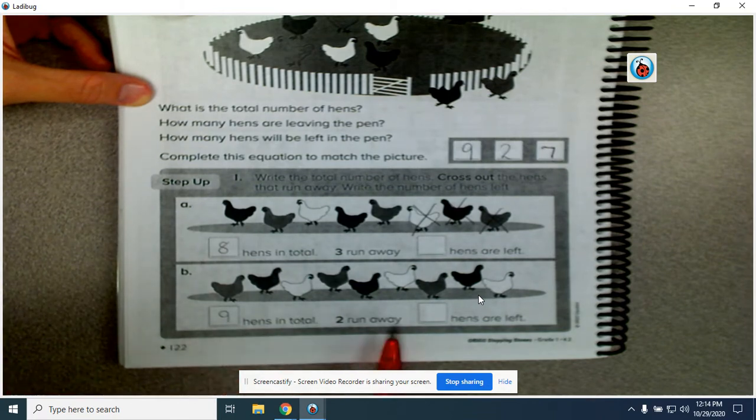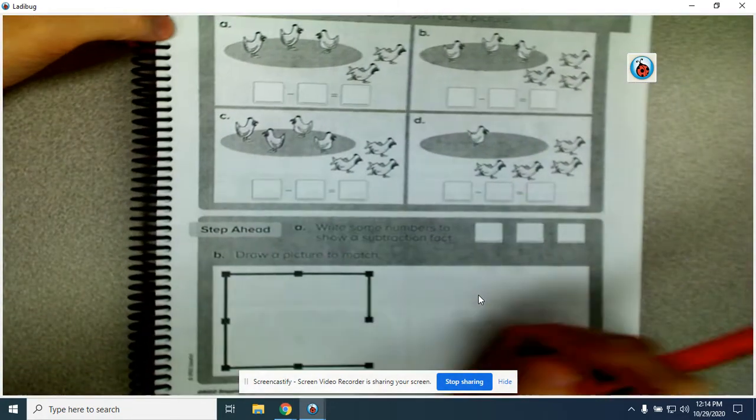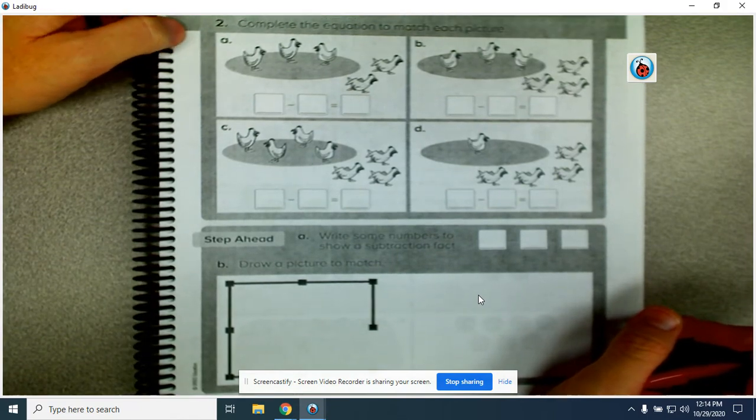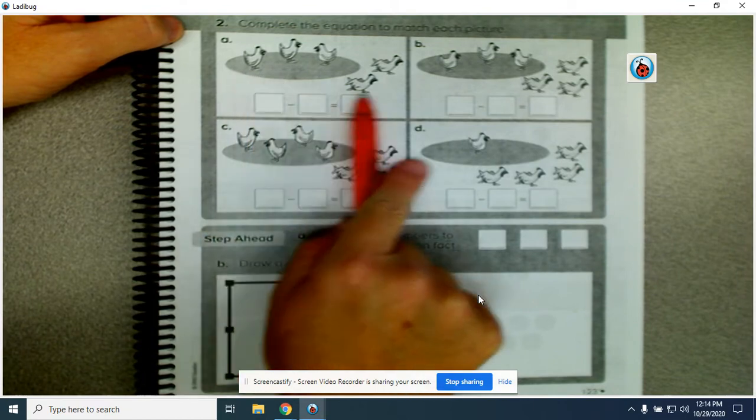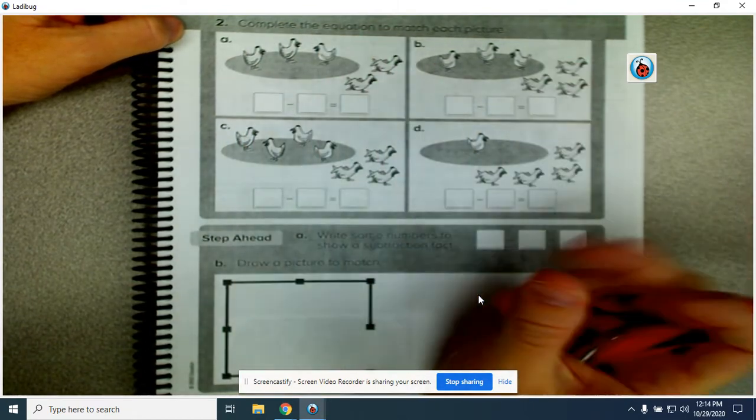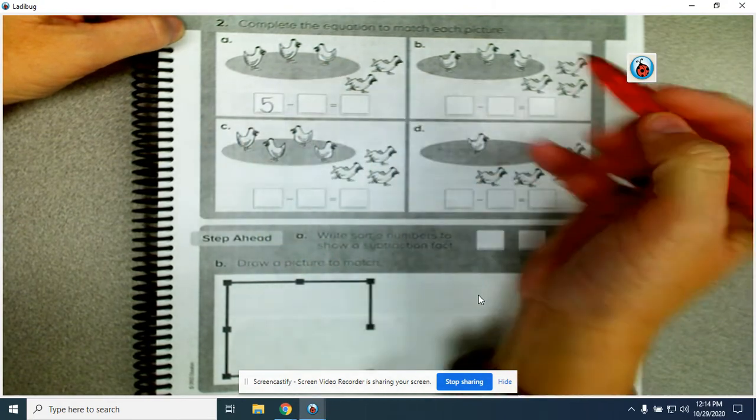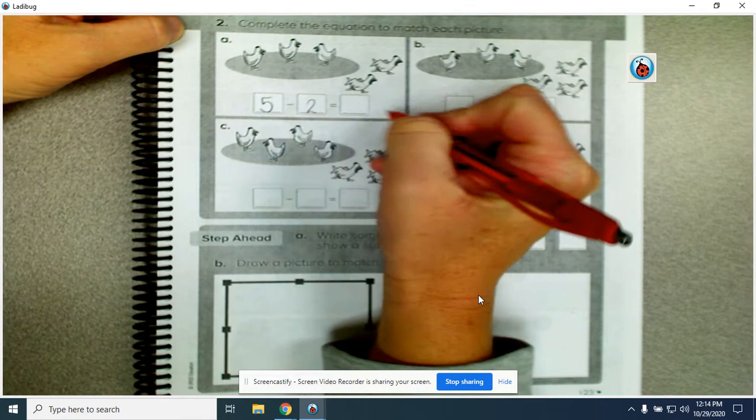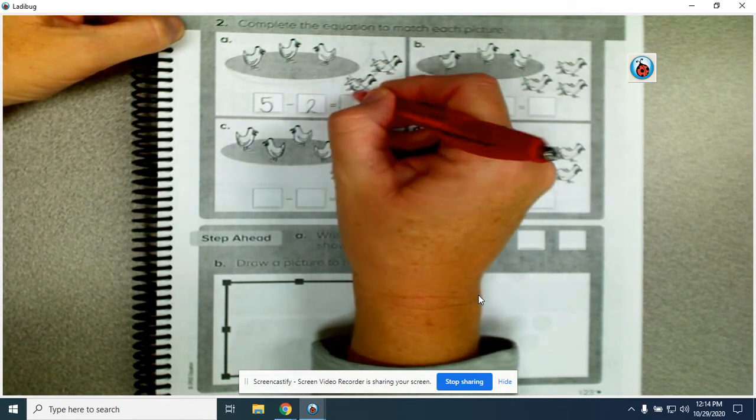The next one, nine hens in total, two run away, how many hens are left? And then when you get to the next page, you're going to fill in the whole number sentence. You're going to complete the number sentence or the equation to match the picture. So on this one, how many hens do we have all together? There are five hens all together minus two ran away equals how many are left? Five minus the two equals three left.